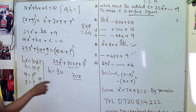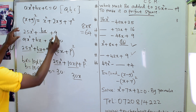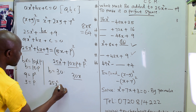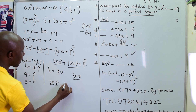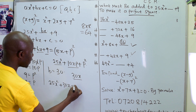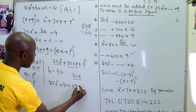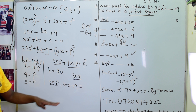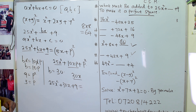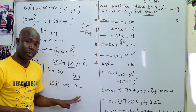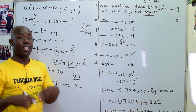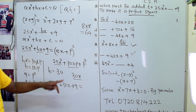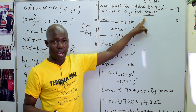By getting 30x, the equation becomes 25x squared plus 30x plus 9. We can get the product and the sum in this quadratic equation, so we say it is a perfect square.